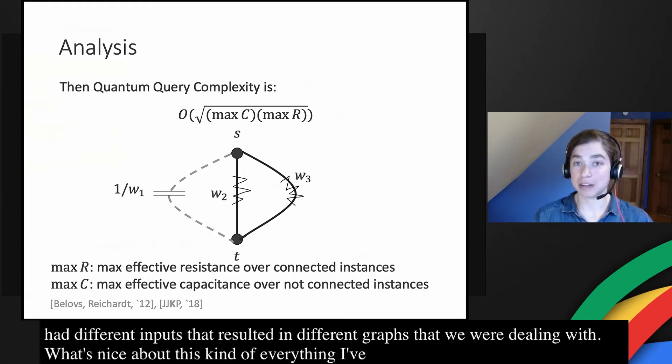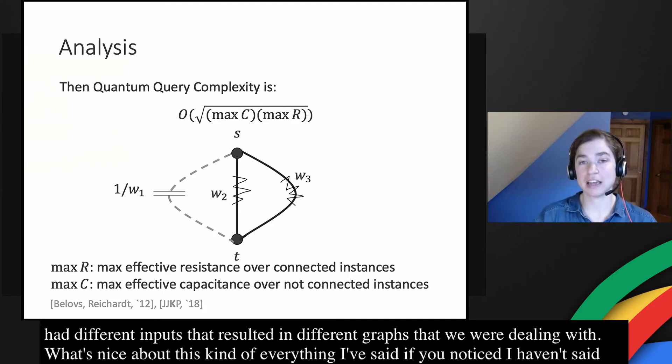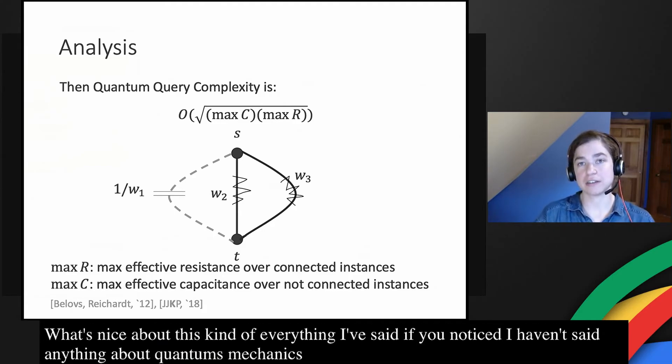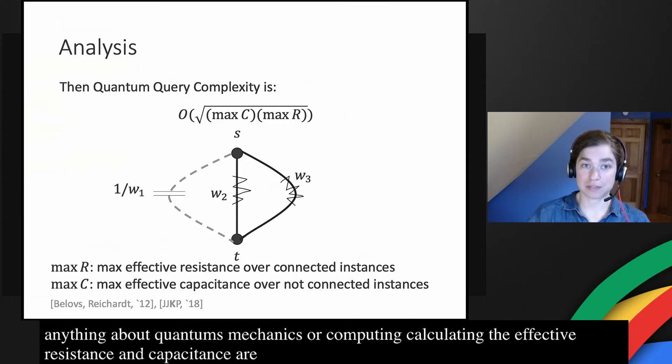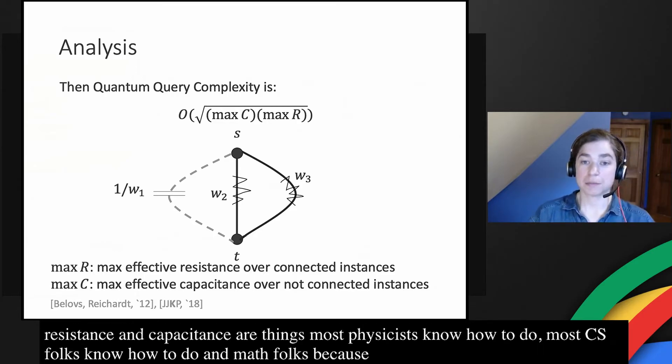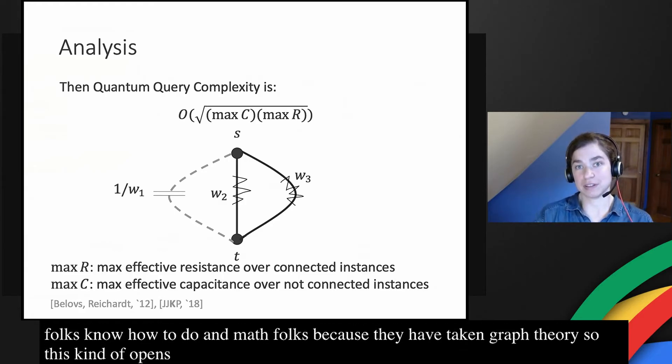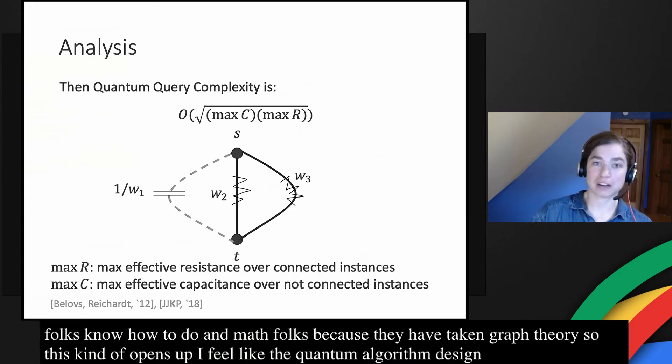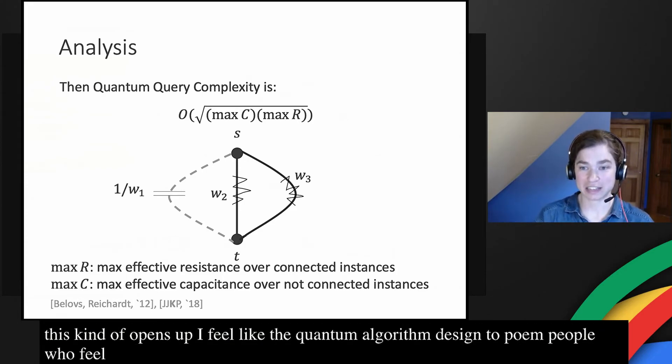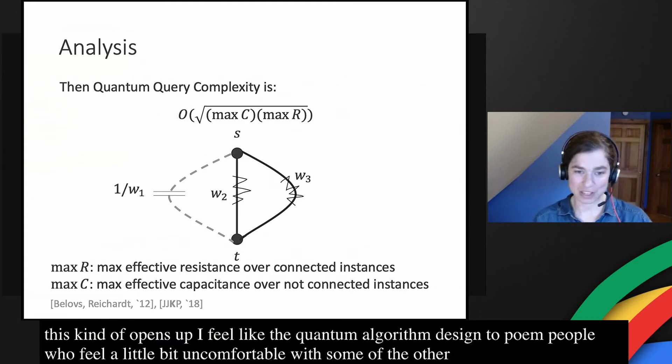What's nice about this, everything I've said so far, if you've noticed I haven't really said anything about quantum mechanics or quantum computing. And calculating the effective resistance and effective capacitance are things that most physicists know how to do because they've taken E and M. It's a thing that most CS folks know how to do and most math folks know how to do because they've taken graph theory. So this kind of opens up quantum algorithm design to potentially people who feel a little bit uncomfortable with bras and kets and some of the other quantum notation that we like to throw into things.